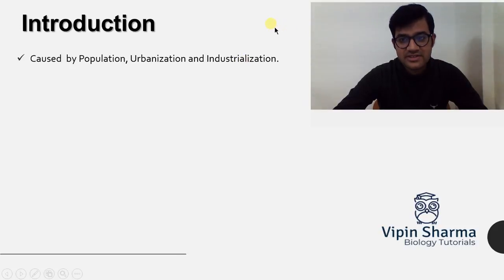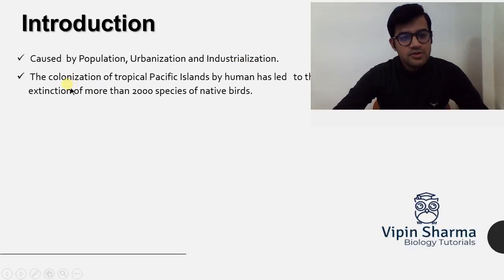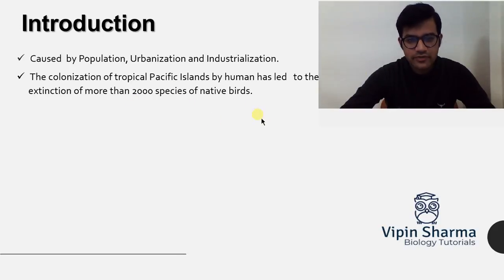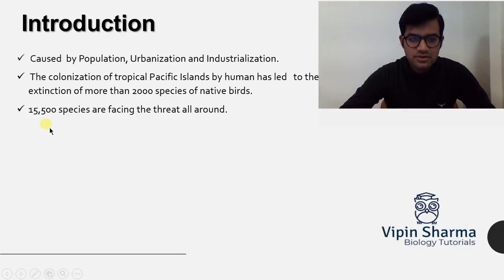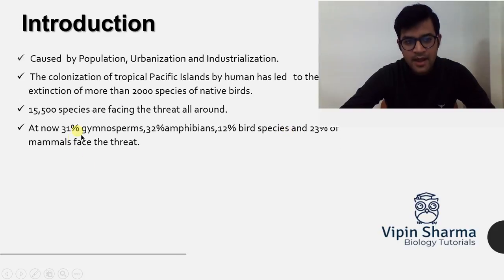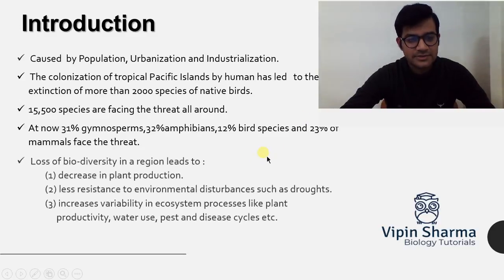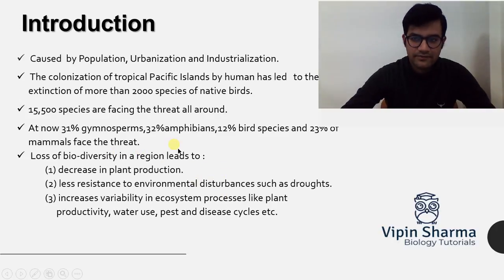Here's an example: colonization of tropical Pacific islands led to the extinction of more than 2,000 species of native birds. Currently, 15,500 species are facing threat all around the world. These figures show how big the issue is and how badly it is already impacting humans — and if we don't conserve biodiversity, it's going to get worse.